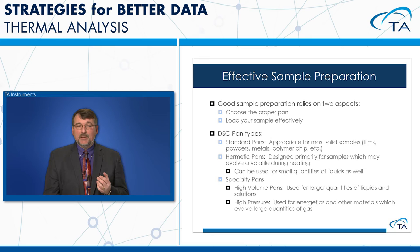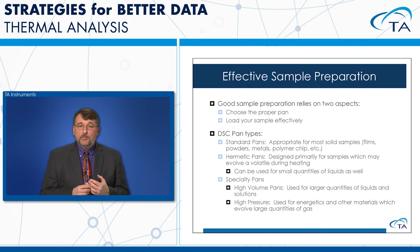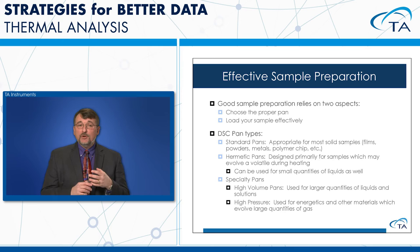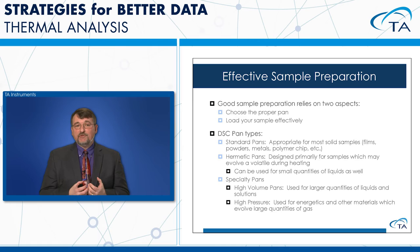There are multiple DSC pan types, and the right pan depends on your sample. Standard pans are appropriate for most solid samples — films, powders, metals, polymer slices. Hermetic pans are good for samples with volatiles you want to retain, and for small quantities of liquid. Specialty high-volume pans accommodate larger samples and maintain a hermetic seal. High-pressure pans are used when the sample generates large quantities of gas and high pressures during volatilization.